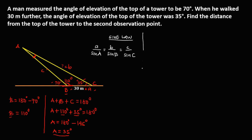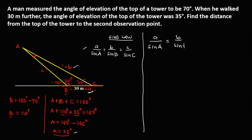To solve the problem using the Law of Sines formula, since the given side is side A and we have angle A, we use: A over sine angle A equals B over sine angle B. Substituting the values: 30 over sine 35 degrees equals side B over sine 110 degrees.